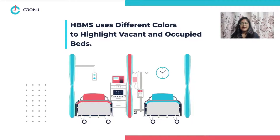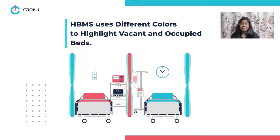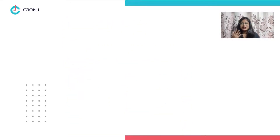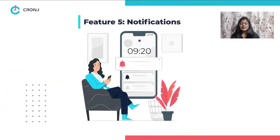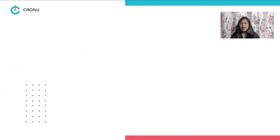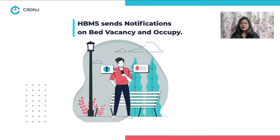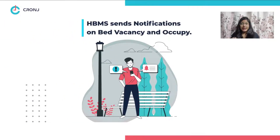Feature four: Color Codes. To distinguish between vacant and occupied beds, this system uses different color codes to highlight them.